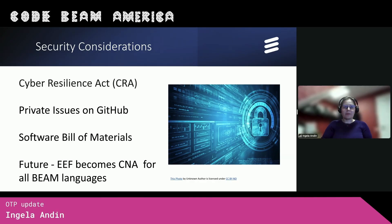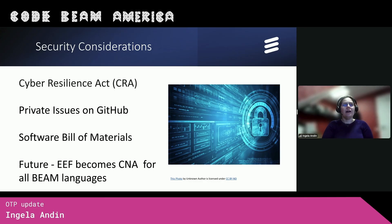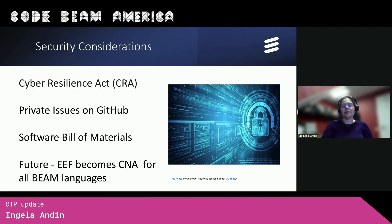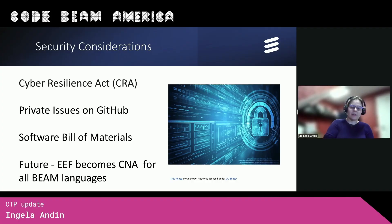Security is also something we are always considering. We are following closely the Cyber Resilience Act that the European Union is working on, and the US is working on similar things. One of the things we have already done because of this is that we have adopted private issues on GitHub. So if you think you have found a vulnerability in our code base, you can tell us about it without telling the rest of the world. When we have a CVE for it and the solution, it will be published through our CNA, which is GitHub at the moment. But in the future, probably the Erlang Ecosystem Foundation will become our CNA together with all the other BEAM languages.